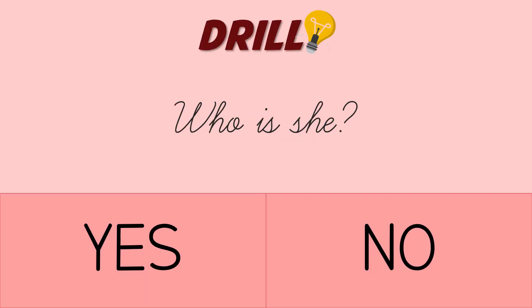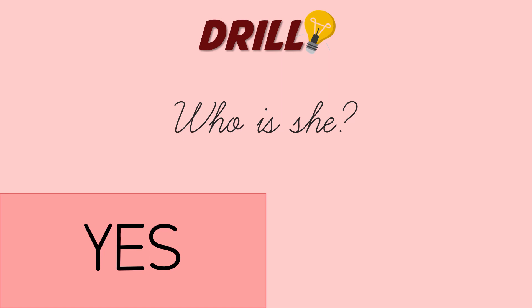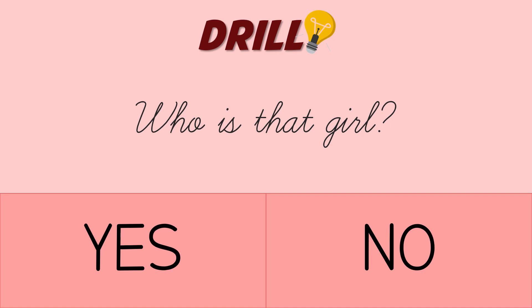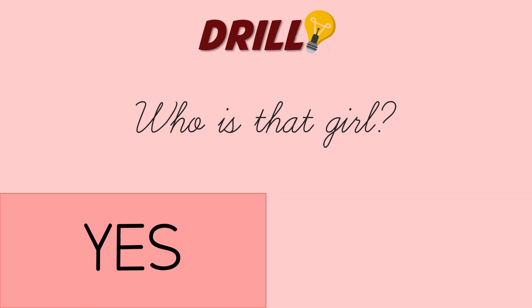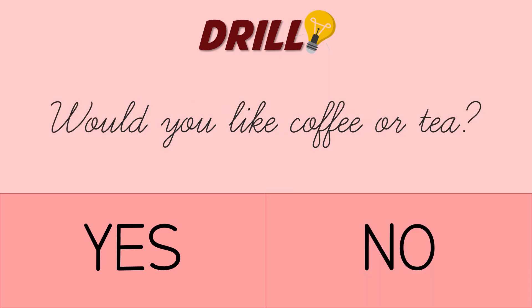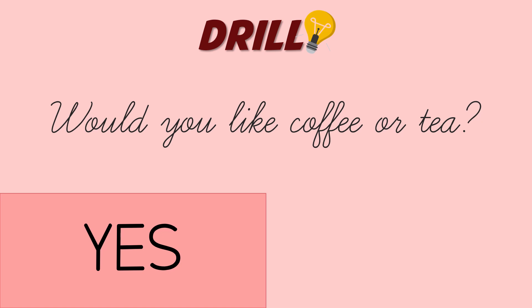Who is she? Do you think it's interrogative? If your answer is yes, you are correct. It has a WH word and ends with a question mark. Next, who is that girl? Is this interrogative or not? If you answered yes, you are correct. Another question: would you like coffee or tea? If you answered yes, indeed, this is an example of an interrogative sentence.